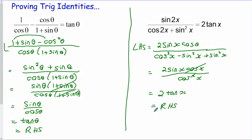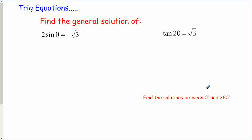Remember, even if you're not really sure what to do, do something - you'll get a mark just for using one of your identities correctly. Try and show some working. The nice thing about a trig identity is you do know when you're right. We're going to move on to trig equations and find general solutions.